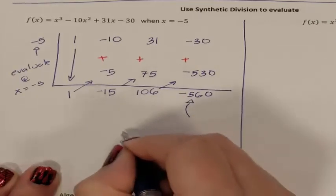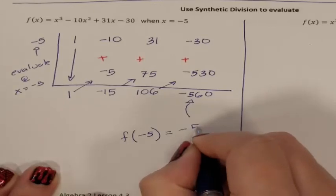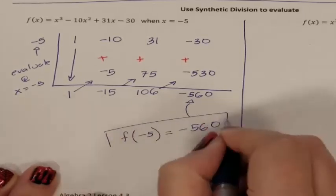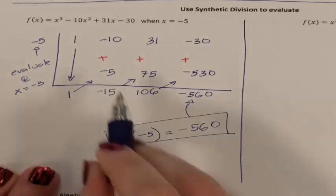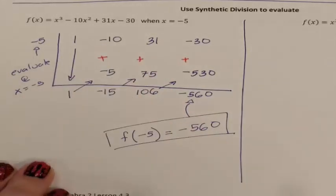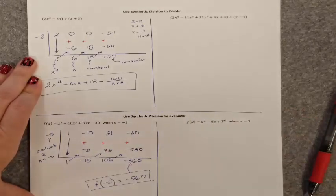So this is telling us when I evaluated the f rule at negative 5, you would have gotten the answer negative 560. And you could double check that by using the order of operations like you did in middle school and evaluating it all the way through. There are two problems left on the page. These two problems are left for you for independent practice.